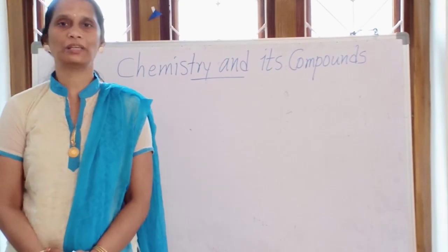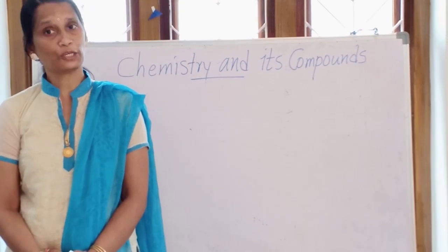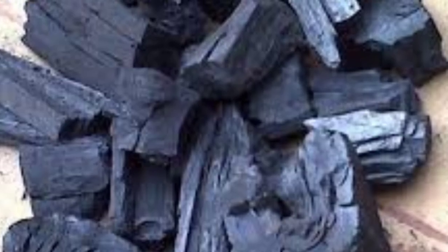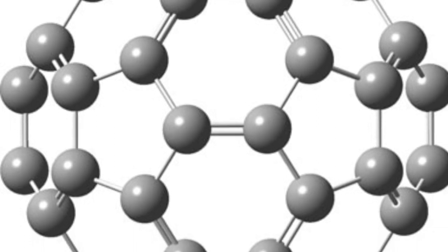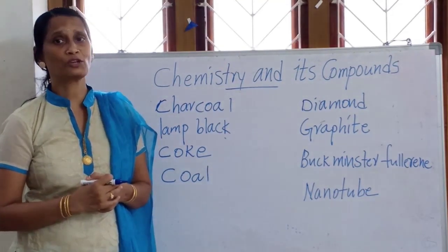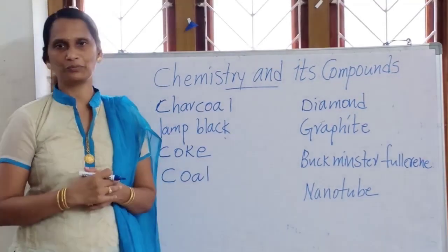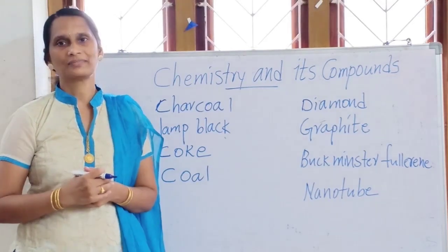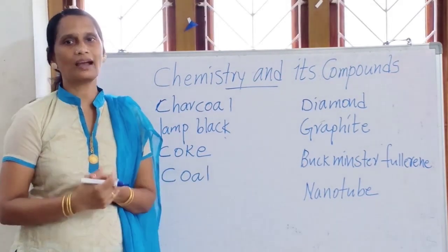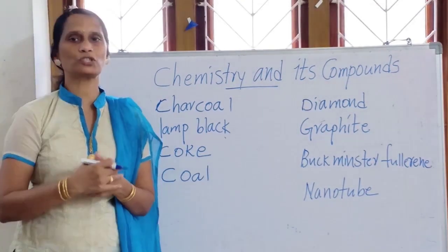Welcome back children. I know you are familiar with many of the carbon compounds. Can you name some of them? Charcoal, cork, animal charcoal, wood charcoal — all are carbon forms. And the costliest diamond and the graphite in your pencil, and some man-made compounds like graphene and nanotubes — these all are forms of carbon.